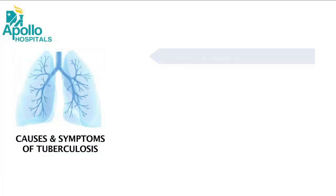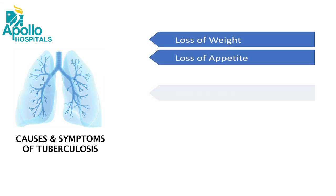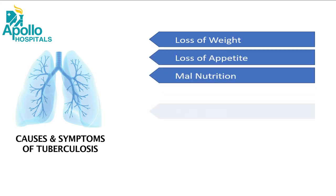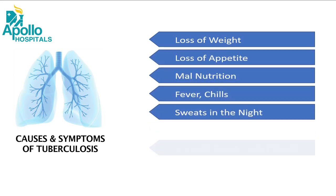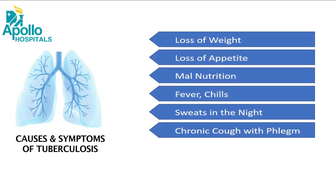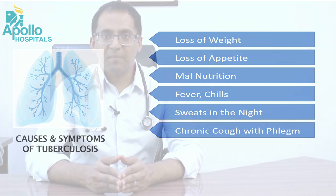So who gets tuberculosis and what are the symptoms? People who have had a loss of weight, loss of appetite, malnourishment, fever, sweating at night, chills, and those who have a cough that is not going away for more than two weeks and who are producing a lot of phlegm should consider being evaluated for tuberculosis — especially in a country like India where it is so common.